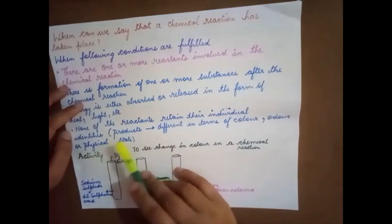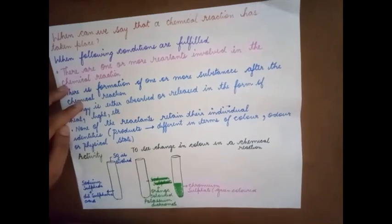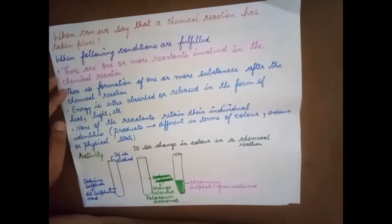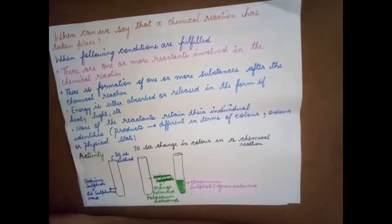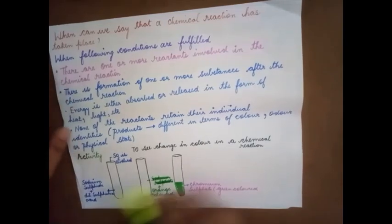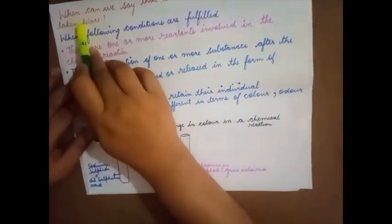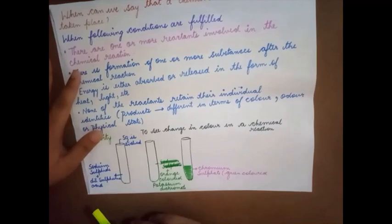None of the reactants retain their individual identities — that is, products differ in terms of color, odor, or physical state. When reactants combine to form a product, their properties differ. For example, H₂ and O₂ are gas molecules, but they combine to form water, which is a liquid. The properties and physical states of water, hydrogen, and oxygen are entirely different.